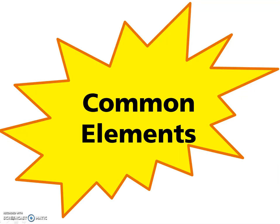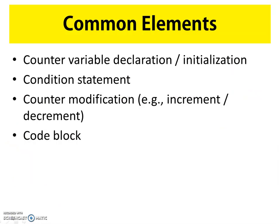Although the order and location of these common elements differ from loop to loop, they do always include each of these four elements. The first element is the counter variable declaration and initialization. This declares our counter variable and sets that variable's start value.